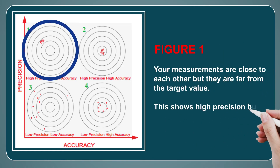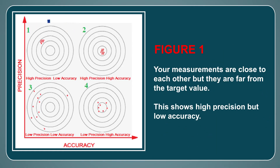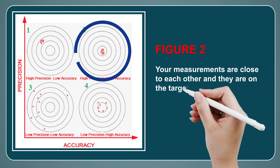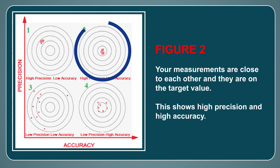Figure 1: Your measurements are close to each other but they are far from the target value. This shows high precision but low accuracy. Figure 2: Your measurements are close to each other and they are on the target value. This shows high precision and high accuracy.